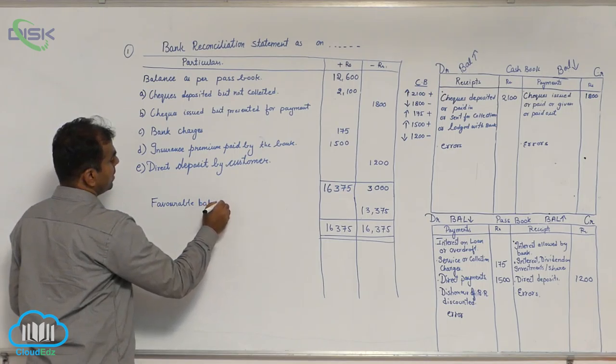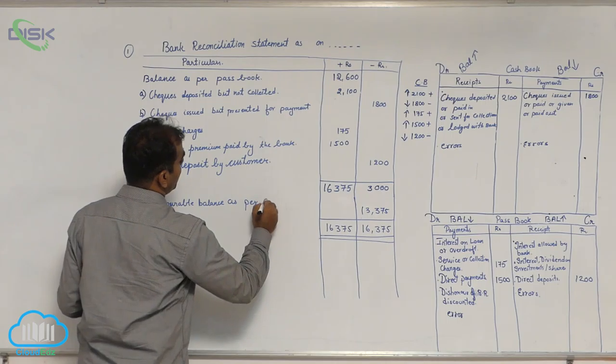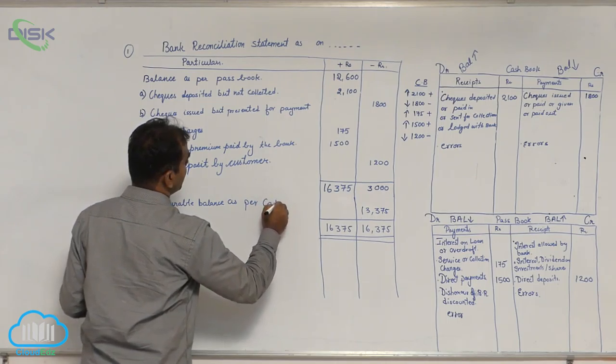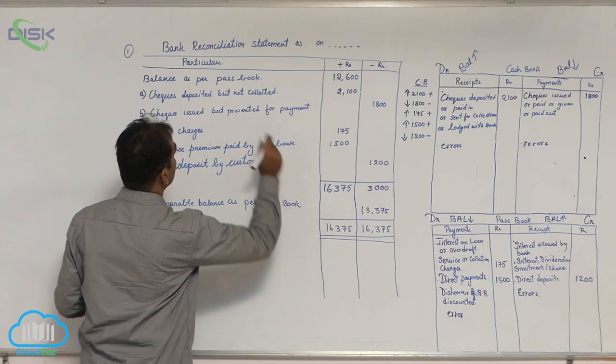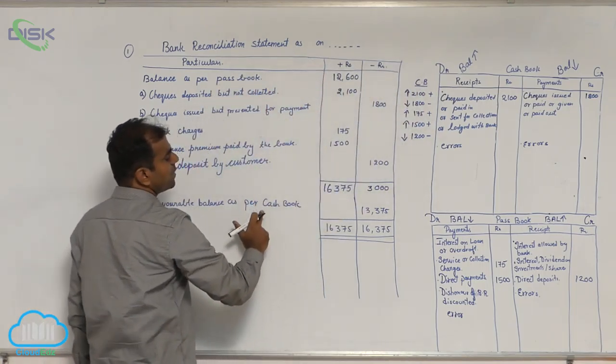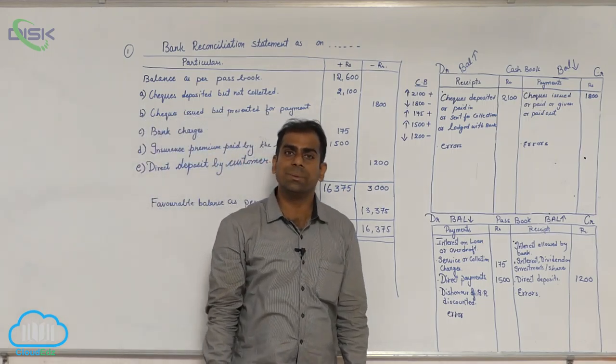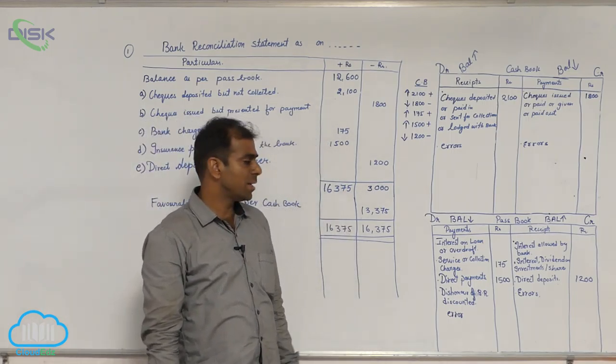As per which book? Cash book, because we started with passbook. Our aim was to find out cash book balance. So we have found out cash book balance. That means according to you, in your bank you have 13,375.